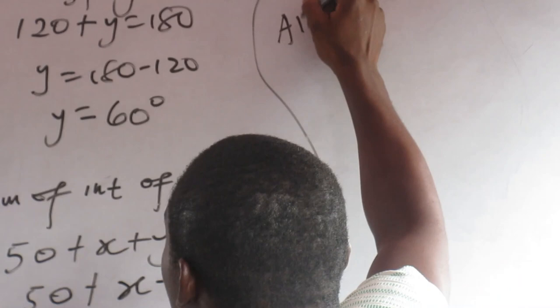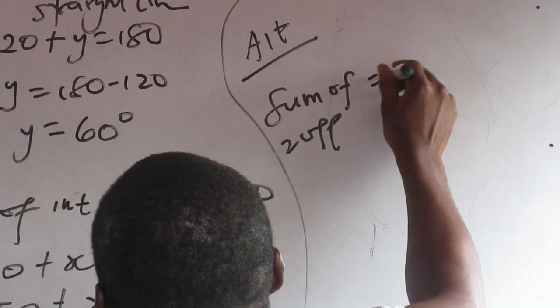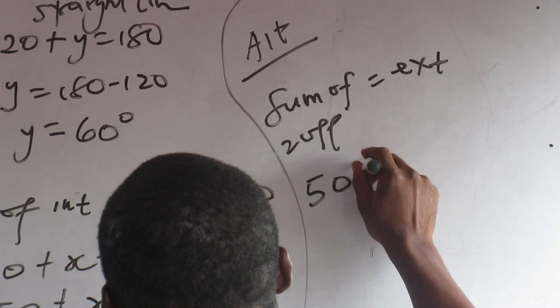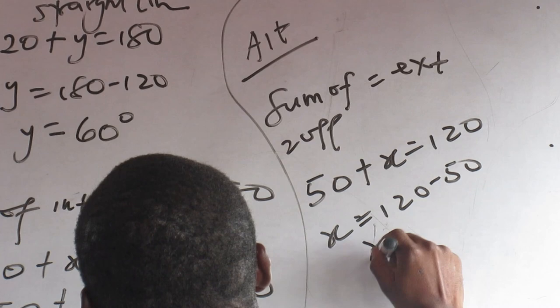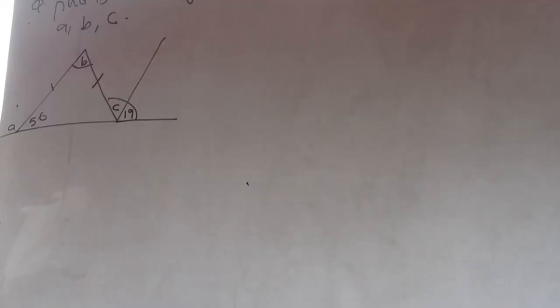Another easy way is by using sum of two opposite equals the exterior. You know, this is opposite to this. So there is 50 plus X equals what? 120. X is 120 minus 70. That is what? 70. It doesn't matter how you do your work. It's what you see.